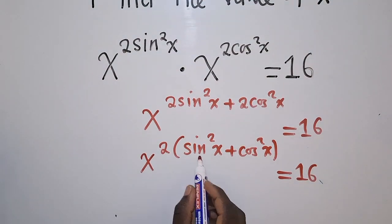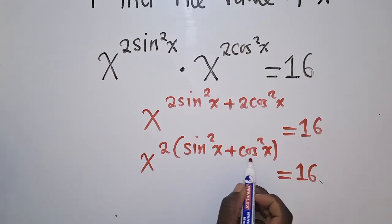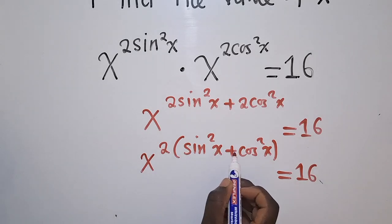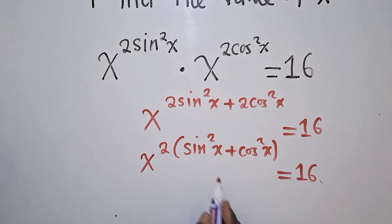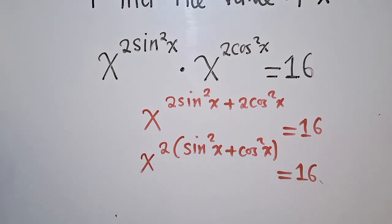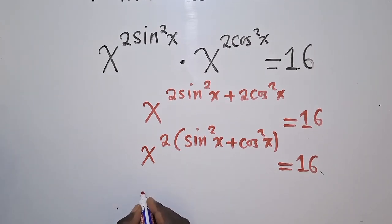Now applying the trig rule here, which says that when you've got sine squared X plus cos squared X, this is the same as 1. So all this thing is equal to 1. So we shall just remain with X power 2 is equal to 16.